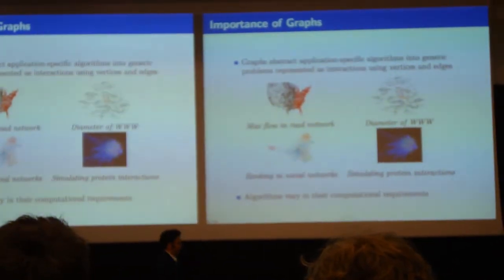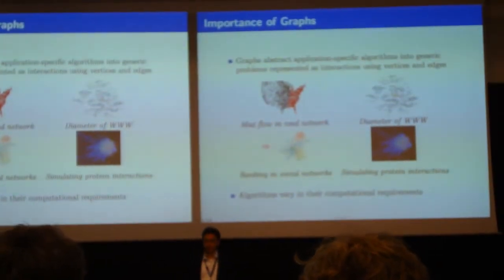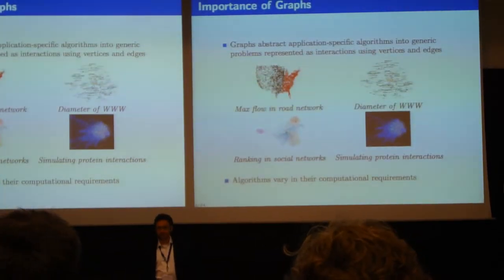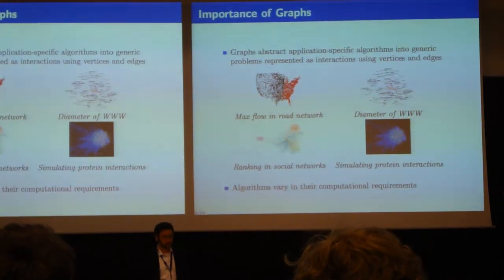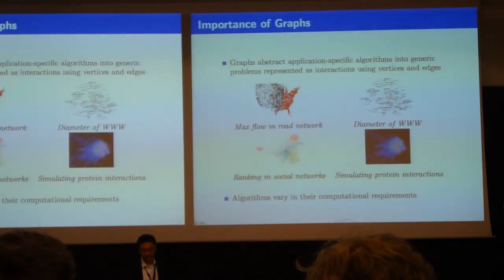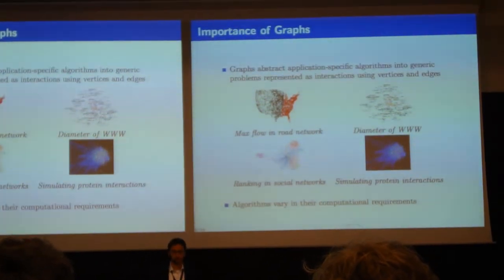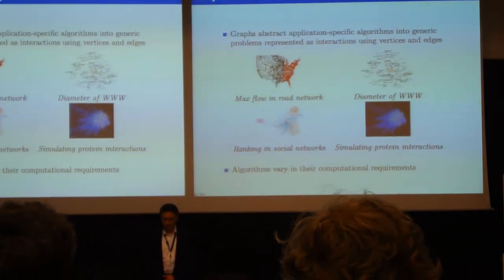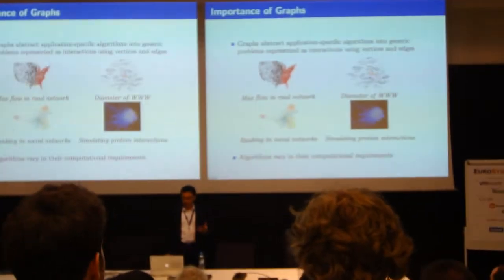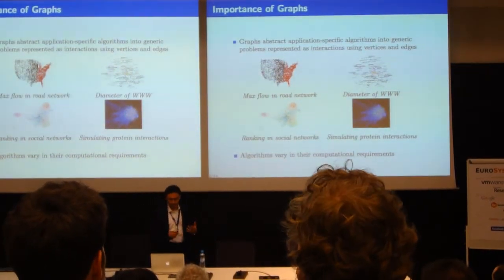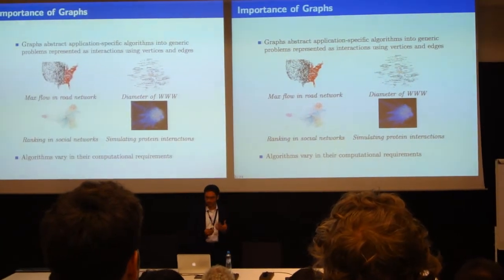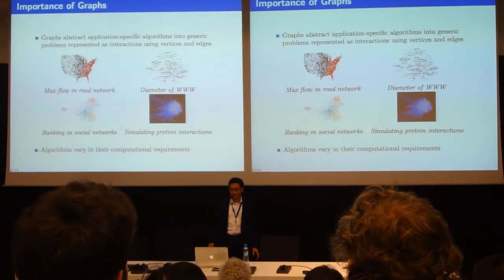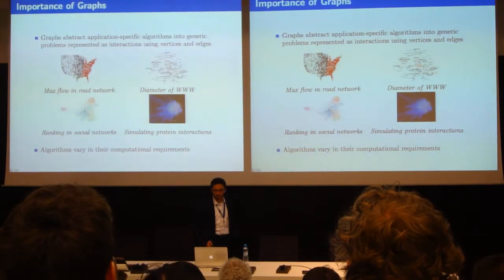At the beginning of the talk, I'll be talking about the importance of graphs. Researchers have been using graphs to abstract application-specific algorithms into generic problems, usually represented as vertex-edge interactions. Examples include max flow in road networks, diameter of the worldwide web, ranking in social networks, and simulating protein-to-protein interactions. Although they all have similar computation behavior, they are different applications and each has its own computation requirements.